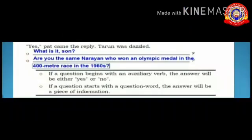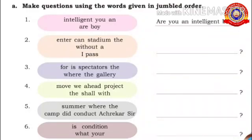Now let's go to the third activity. If a question begins with an auxiliary verb, the answer will be either yes or no — that is known as a yes/no question. If the question starts with a question word, the answer will be a piece of information — that is known as a WH question. Now it's your turn to work out: arrange the jumbled words into a meaningful question. For example: 'intelligent you and are boy' becomes 'Are you an intelligent boy?'